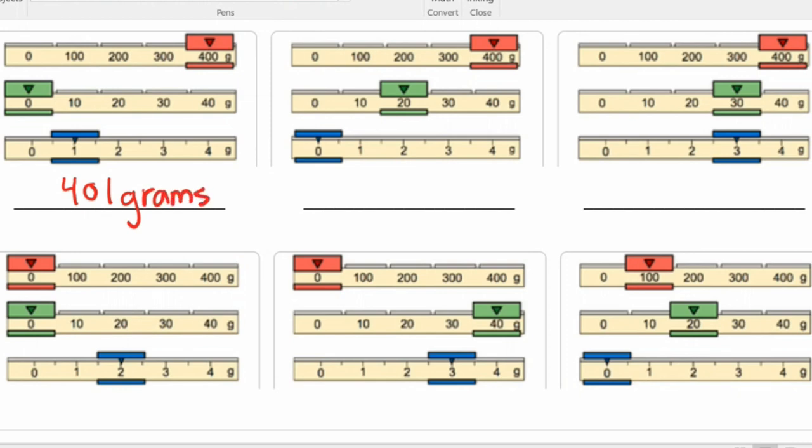The second picture, 400 plus 20 plus 0, we have 420 grams. Our third picture, 400 plus 30 plus 3, 433 grams.